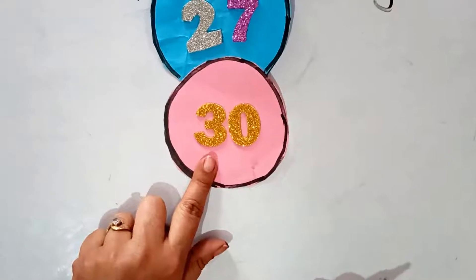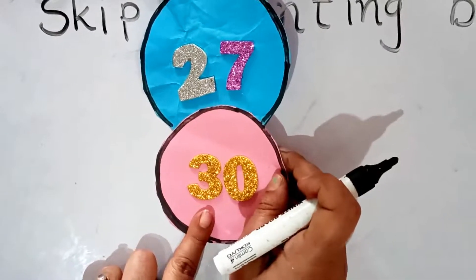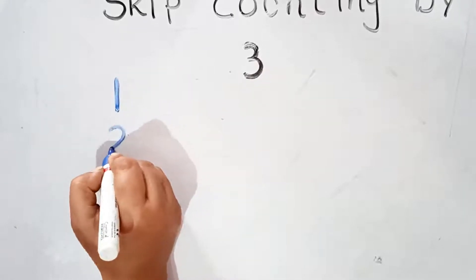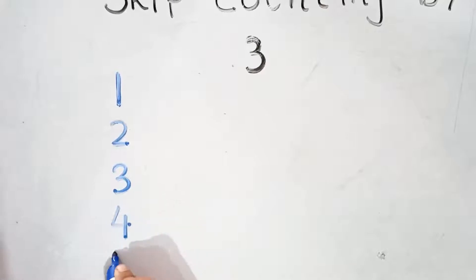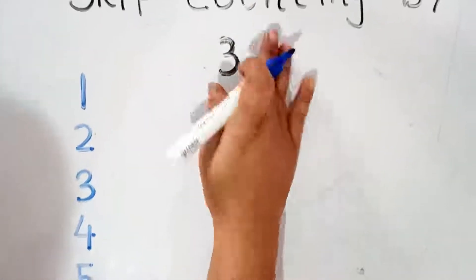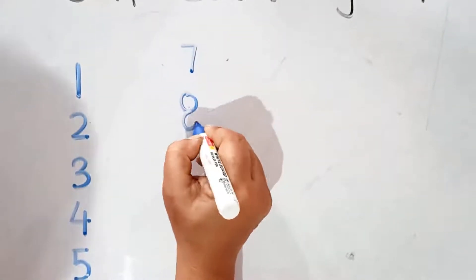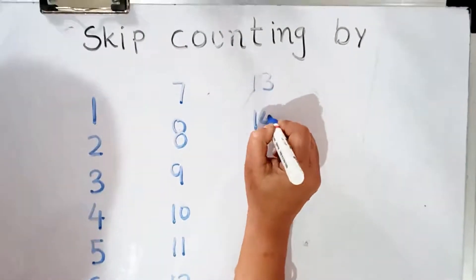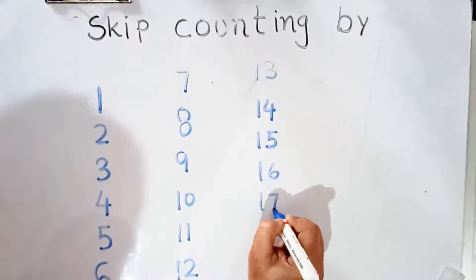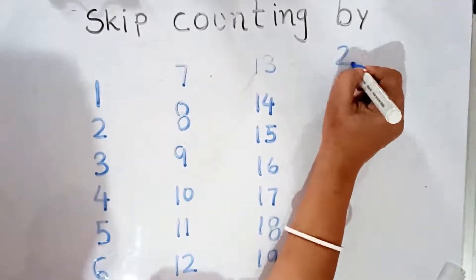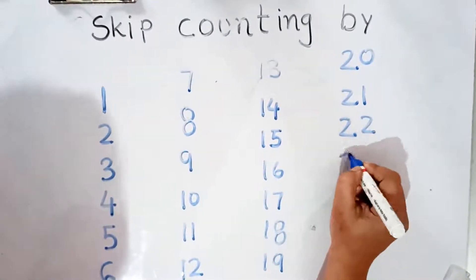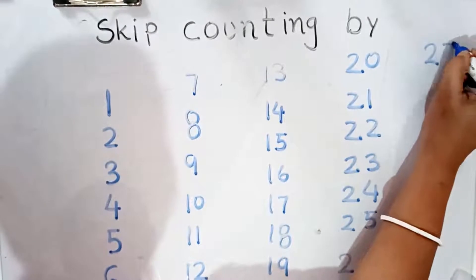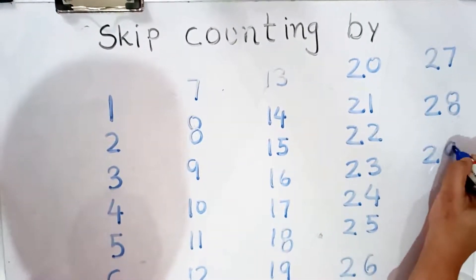These are the numbers which come after skip counting by 3. I am writing numbers 1 to 30: 1, 2, 3, 4, 5, 6, 7, 8, 9, 10, 11, 12, 13, 14, 15, 16, 17, 18, 19, 20, 21, 22, 23, 24, 25, 26, 27, 28, 29, and 30.